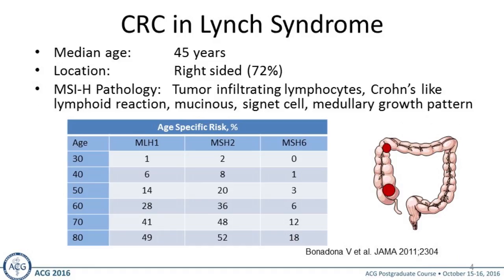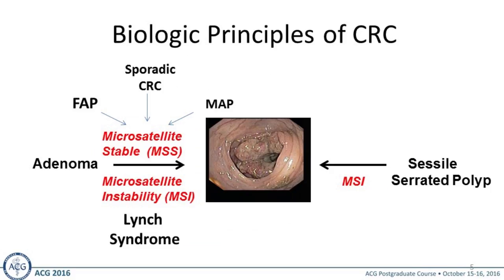Colorectal cancer in Lynch syndrome has a median age of about 45 years. It's preferentially proximal and right-sided. Pathological tip-offs include tumor infiltrating lymphocytes, a Crohn's-like lymphoid reaction, mucinous, signet cell, or medullary growth pattern. MLH1 and MSH2 comprise about 90% of the germline mutations that cause Lynch syndrome. The lifetime risk estimates are about 50% or less and vary by the specific gene mutation.